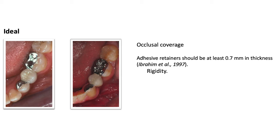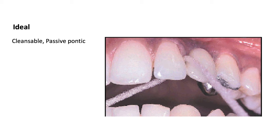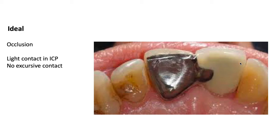Another ideal feature is to ask for the retainer to be a minimum of 0.7 millimeters thick to prevent warping. The design should ensure cleansability — the patient should be able to feed super floss underneath the pontic. In terms of occlusion, we want a holding contact on the pontic in ICP, but we want to avoid all protrusive or lateral excursive contacts.